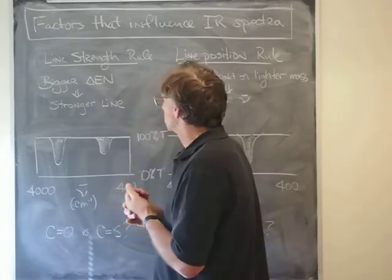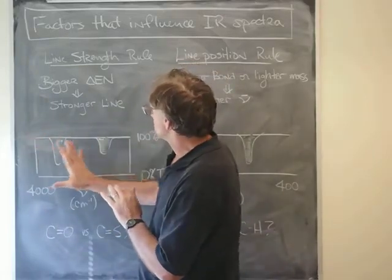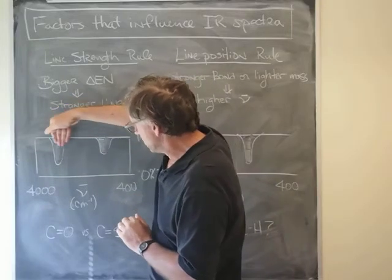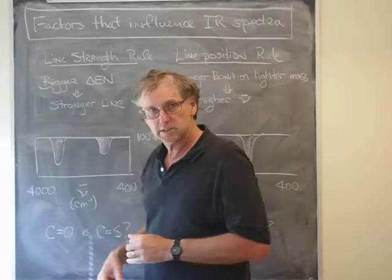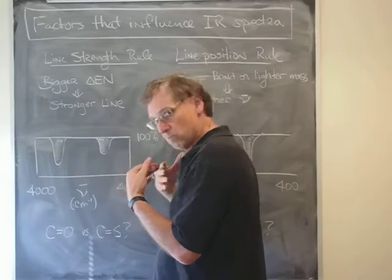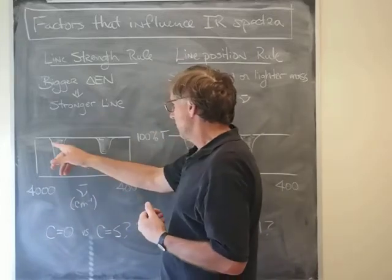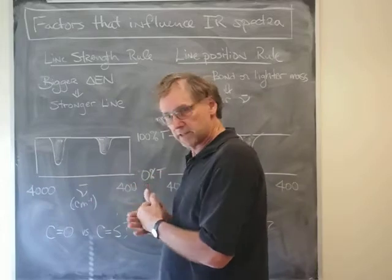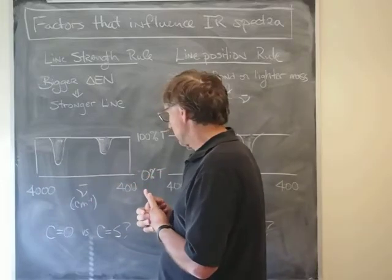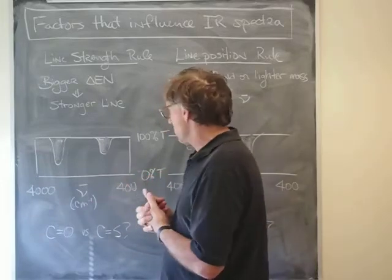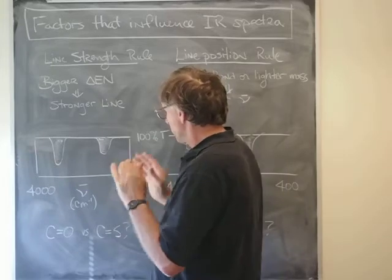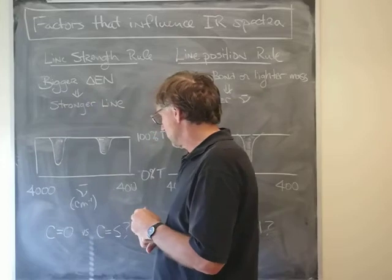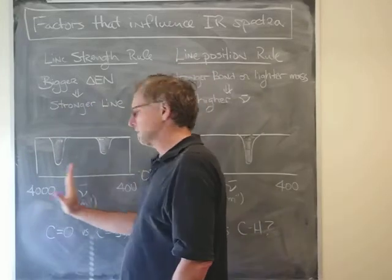A few things before we get into these criteria: a strong absorber would mean that this peak goes way down because it absorbs more. Eventually, if that reached the bottom, that would mean that no light is transmitted, so it must be a very strong absorber. Absorption strength has to do with the size of that inverted peak, and the position has to do with where we are on this axis.